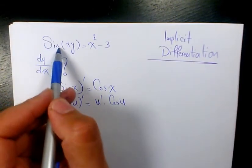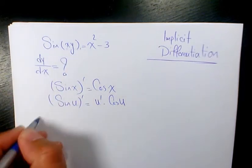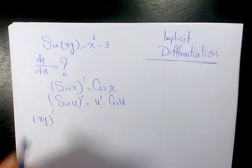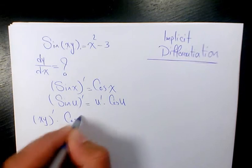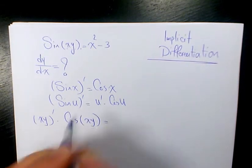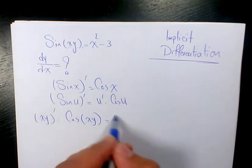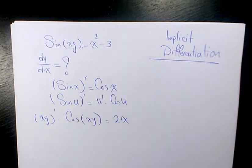So here, derivative of sine xy is going to be the derivative of xy times cosine xy. Derivative of x squared is going to be 2x, and derivative of negative 3 is 0.